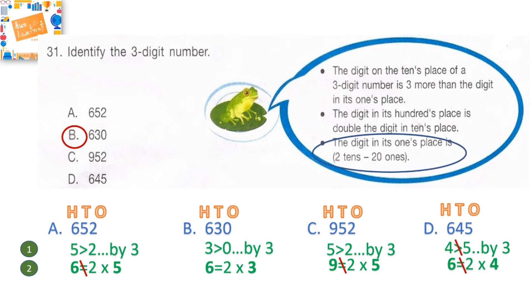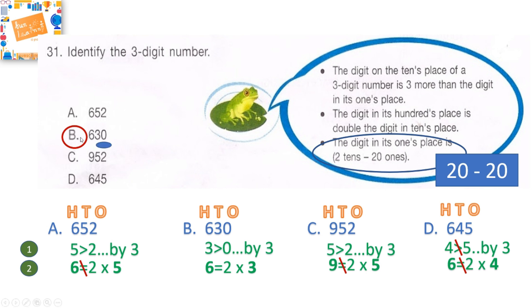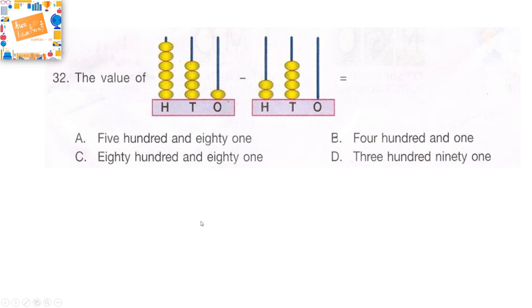Looking at the third clue also helps you arrive at the answer quickly: the digit in its ones place is two tens minus twenty ones, which is (2×10) − (20×1) = 20 − 20 = 0. Option B has zero in the ones place, which confirms the answer. Let's go to our next Achiever Section question.